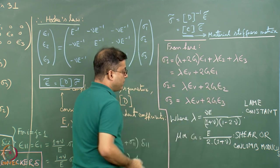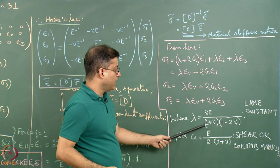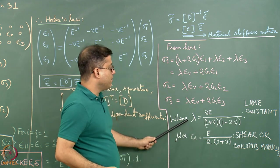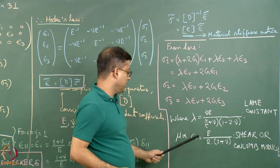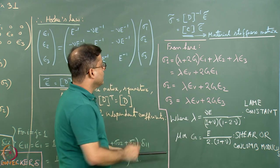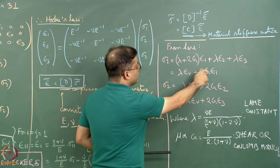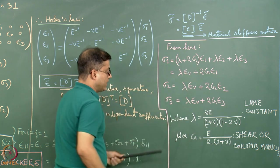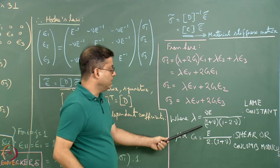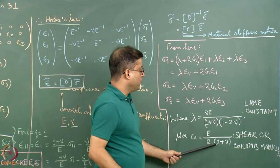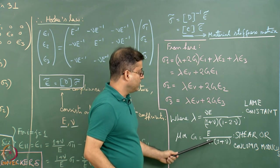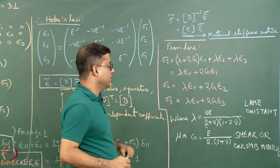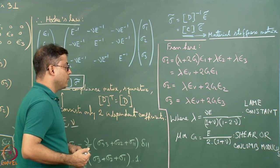Lambda is the Lamé constant, given by lambda = nu*E / [(1 + nu)(1 - 2nu)]. The term G — also written as mu in some books — is the shear modulus or Coulomb modulus, given by G = E / [2(1 + nu)]. Both lambda and G are important material properties.